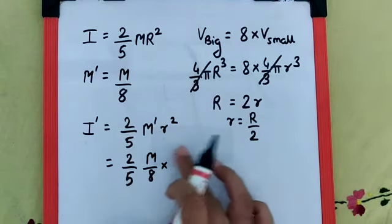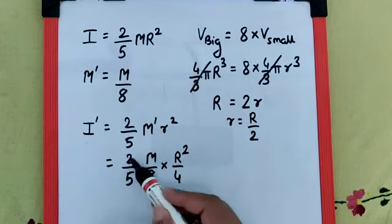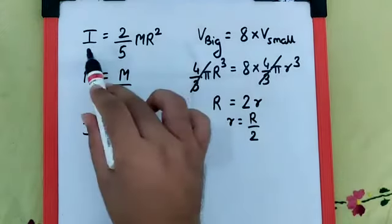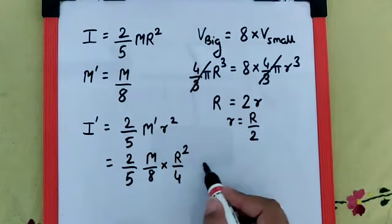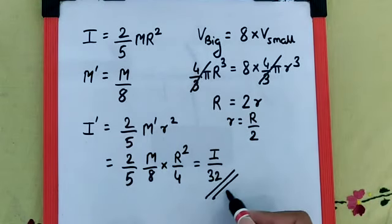Now if you check, 2/5 MR² is I, and 8 × 4 = 32. That makes I/32 as the final answer.